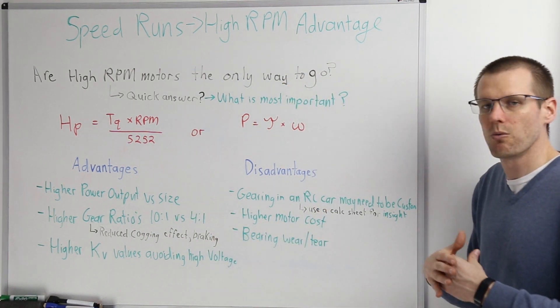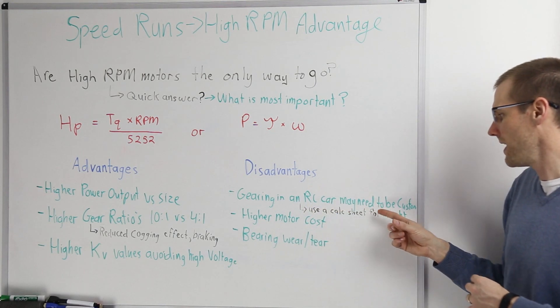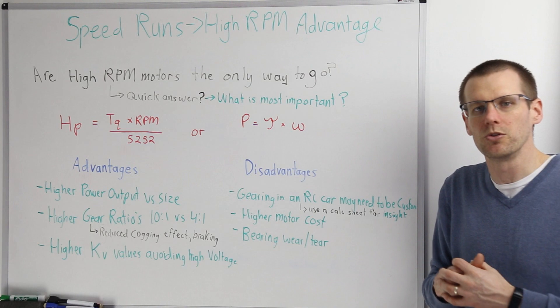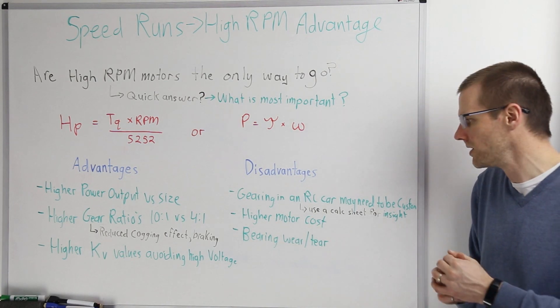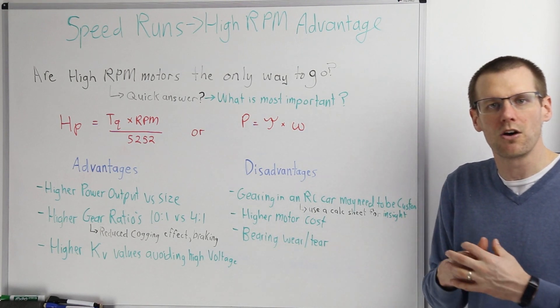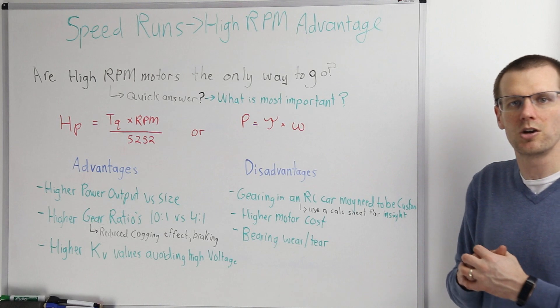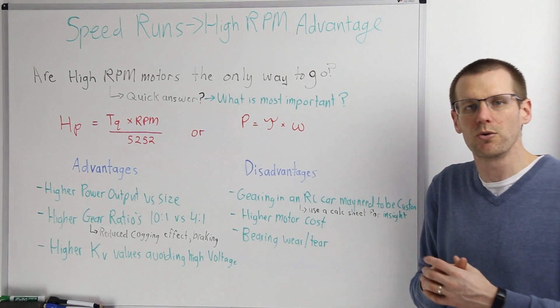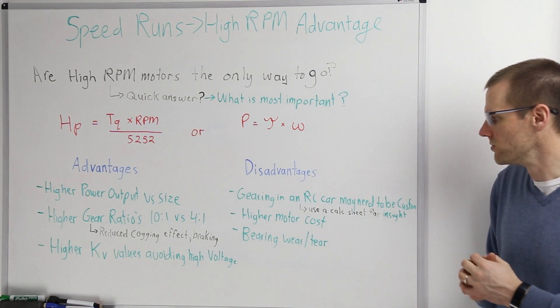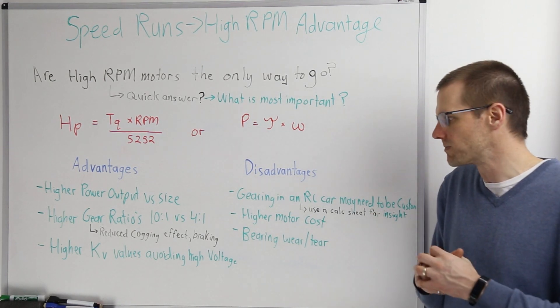Now onto a disadvantage here. One of the disadvantages is that gearing in an RC car may actually need to be customized or custom. We actually found this when we looked at the limitless V2. We had to use the calc sheet that we have on the Patreon website to go through the math and ultimately determine what kind of gearing we would need. We could not use stock gearing. We actually had to alter stock gearing, both the pinion as well as the spur gear. We had to swap those out to something different than what is offered by the manufacturer of that specific vehicle.